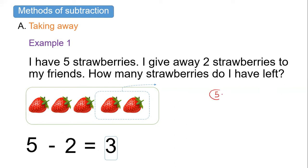We can actually show this using a number bond. We have five as the whole, then we have two, and it means that the remaining part is three. That's how we show it using a number bond.